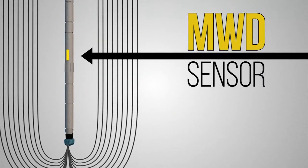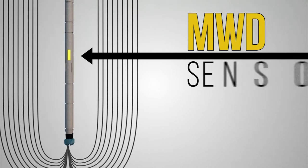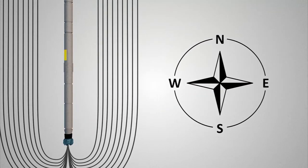When we take an MWD survey, we need to make a measurement of the Earth's magnetic field in order to determine a bearing direction from north, much like that of a compass reading.